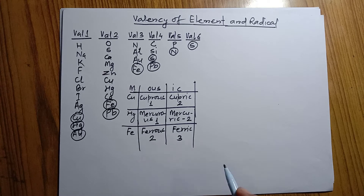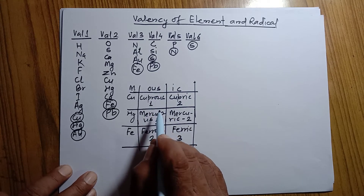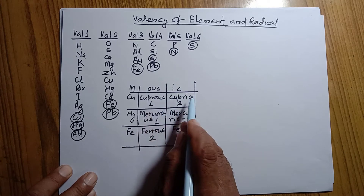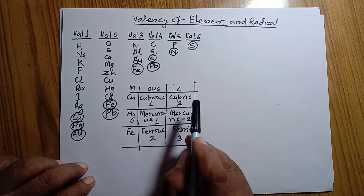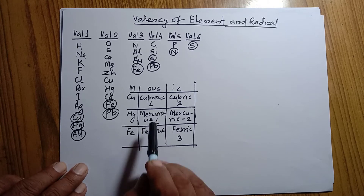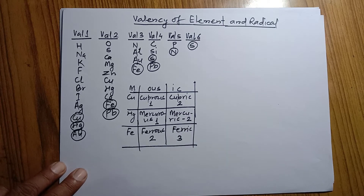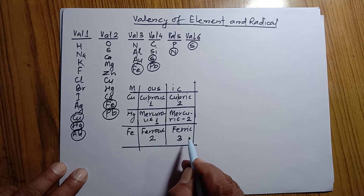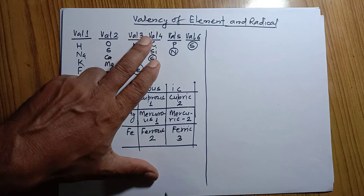There are others also, but a few are given here. The '-ous' suffix represents that the metal has the lower valency, and '-ic' represents that the metal has the higher valency. For example: cuprous chloride — copper has valency 1; cupric chloride — valency is 2. Mercurous oxide — valency is 1; mercuric oxide — valency of mercury is 2. Ferrous sulfate — valency of iron is 2; ferric sulfate — valency of iron is 3.